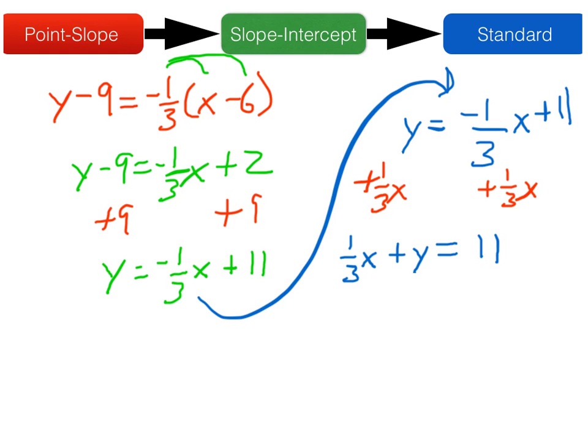And then lastly, to get standard form, we need each coefficient to be an integer. Since the coefficient in front of the x is 1/3, I'll multiply both sides of this equation by 3 and then distribute that 3 in. 3 times 1/3 x is just x. 3 times y is 3y. And that equals 3 times 11, which is 33.